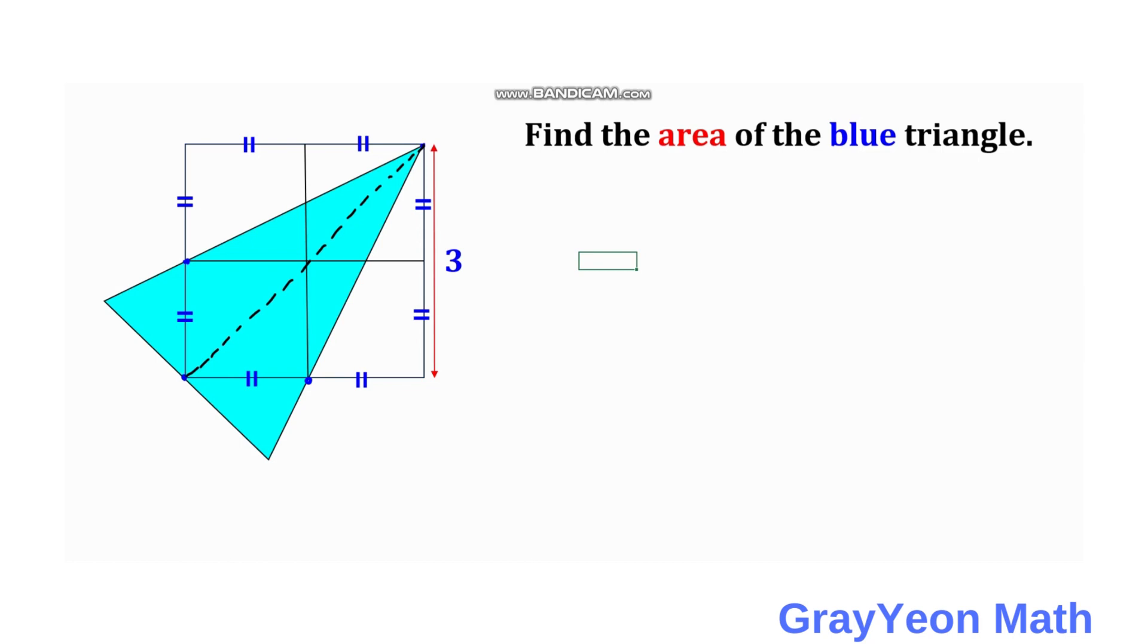And we draw a line from the midpoint of the square to the other midpoint of the square on the side of the square, and we label this as...